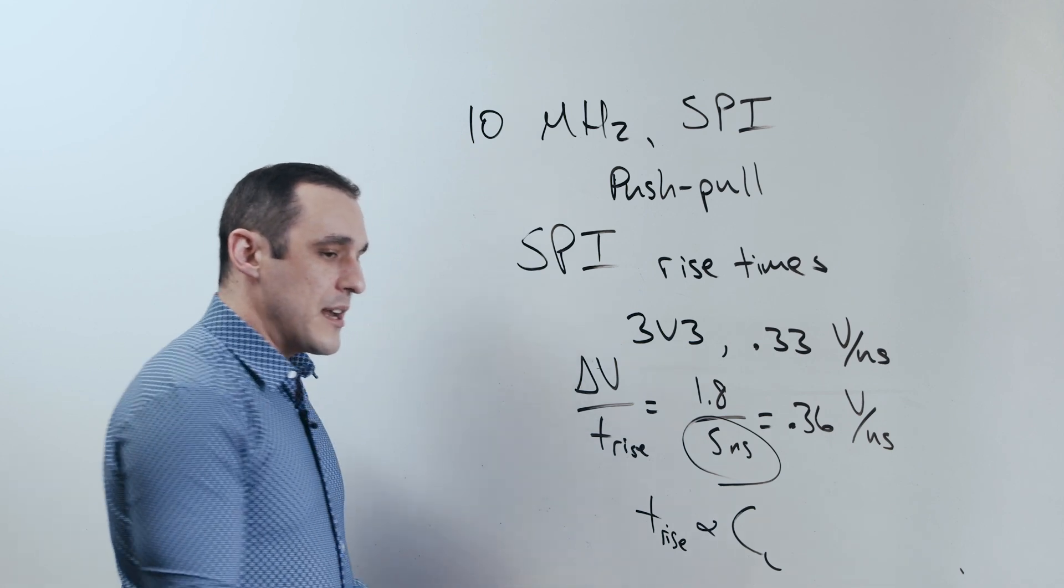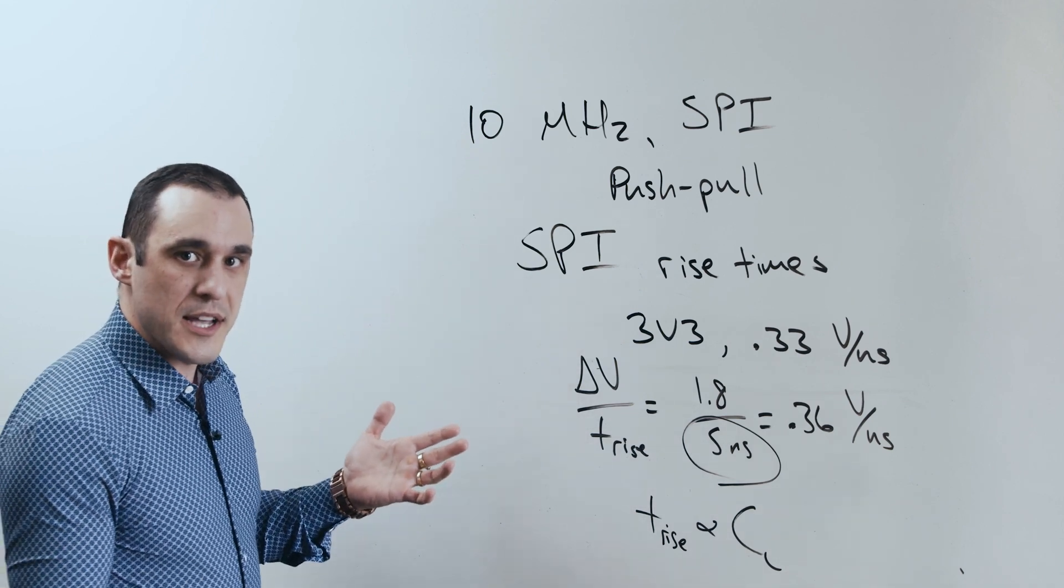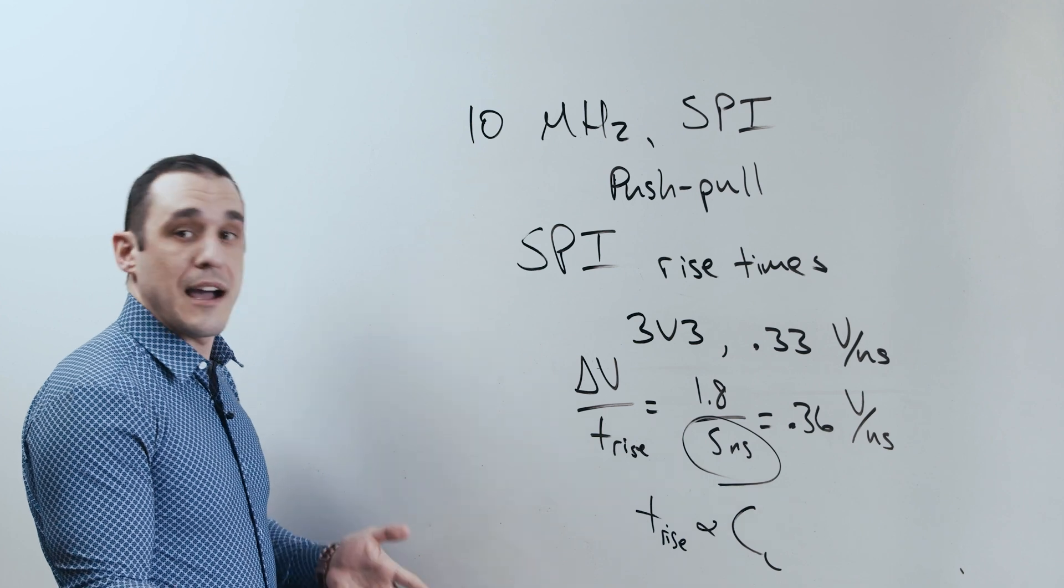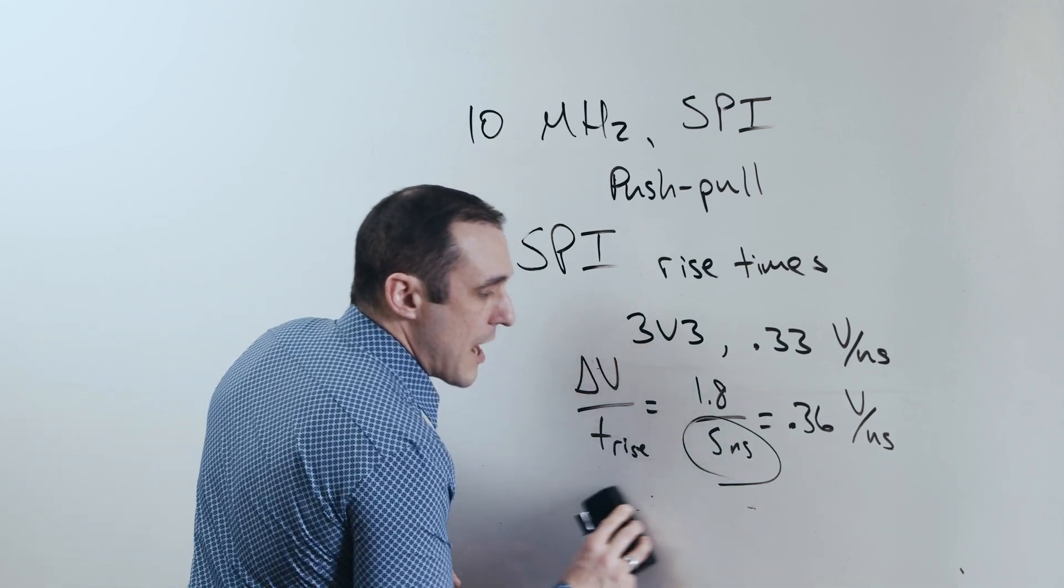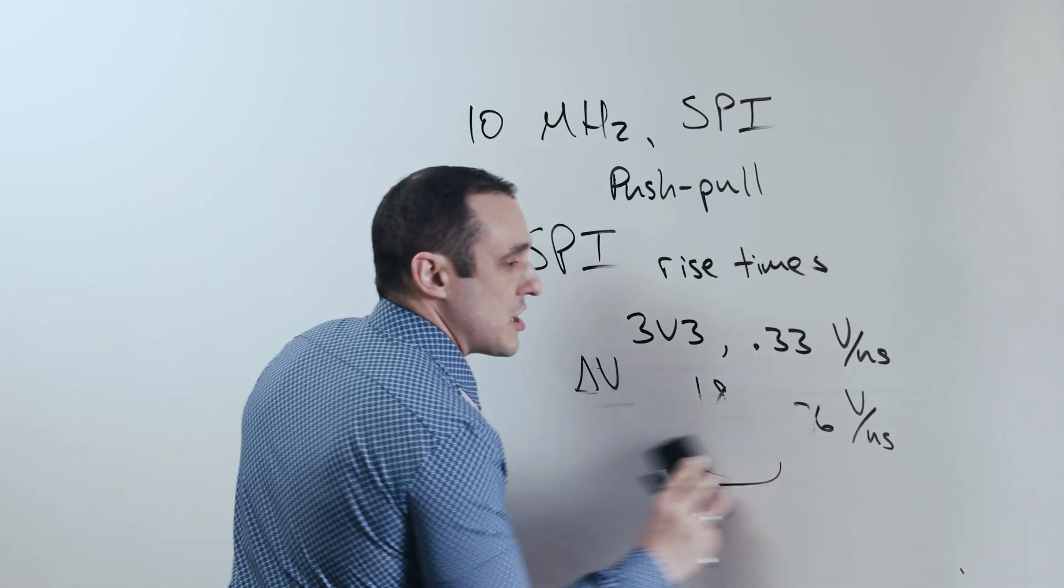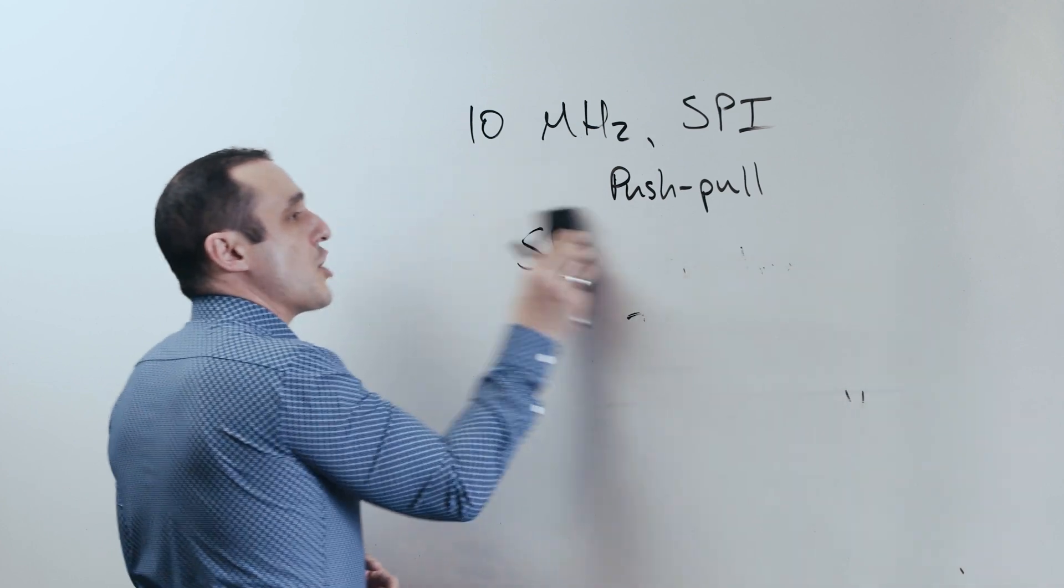So I've thrown out some rise time numbers for you, for example, here on SPI. But how does this compare to a different bus where you might not see these same signal integrity problems like I squared C? Well, I squared C has a different topology, and that topology is open drain.